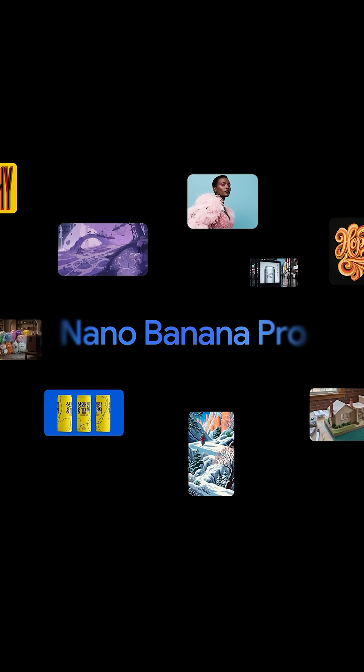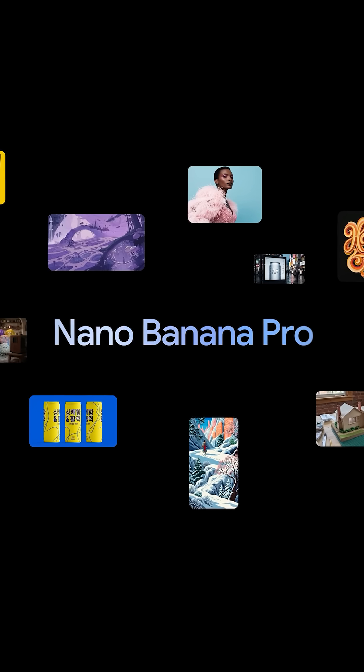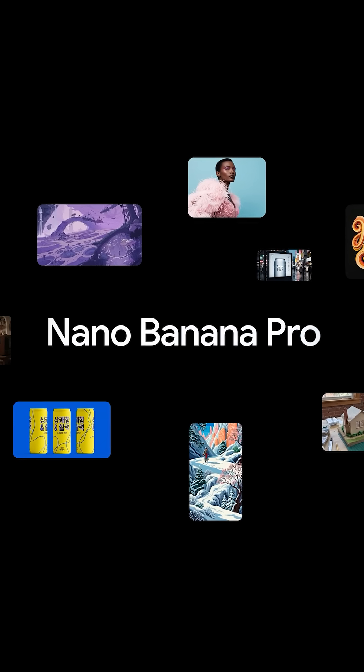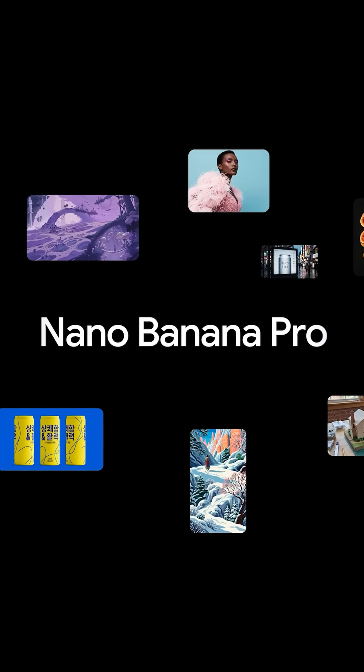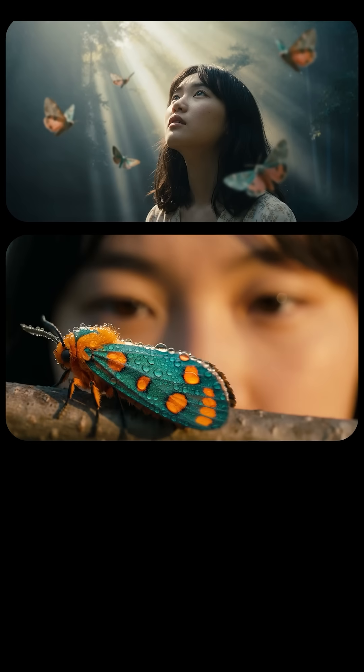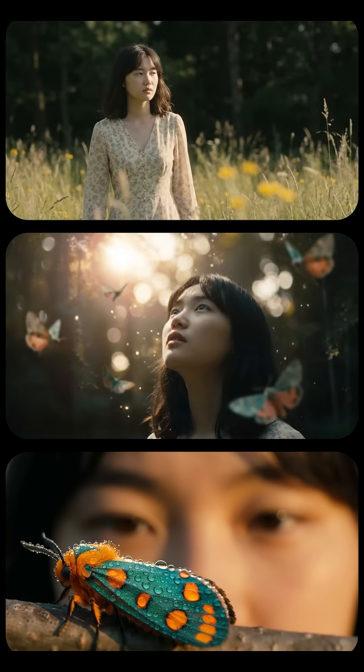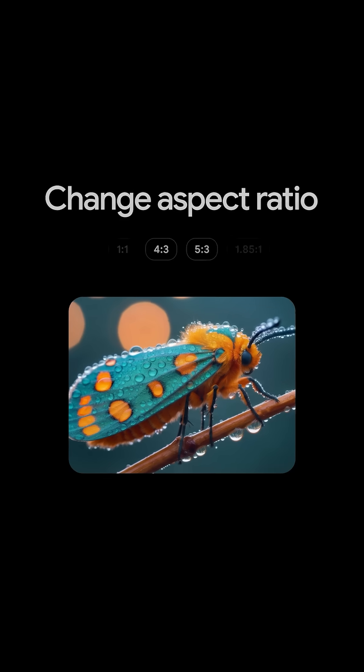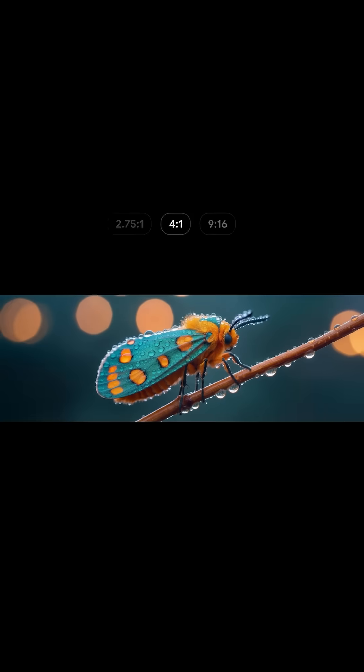Building on Gemini 3, Nano Banana Pro adds an impressive new set of image controls. You can change angles, focus, lighting, and a whole new set of aspect ratios.